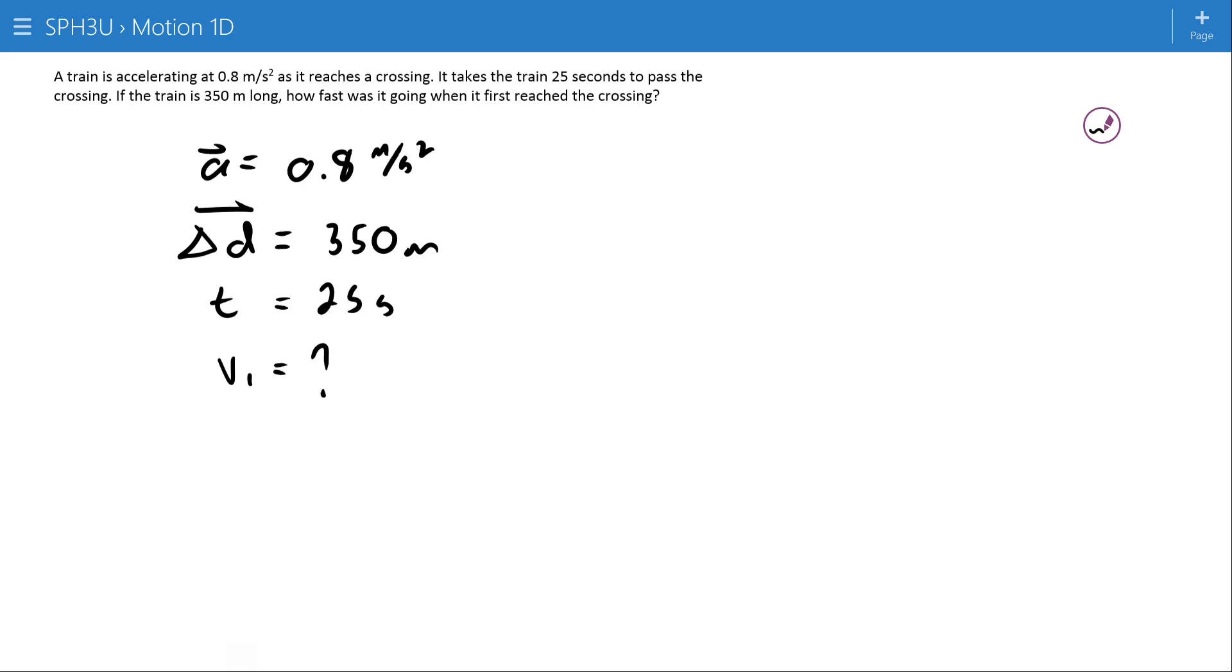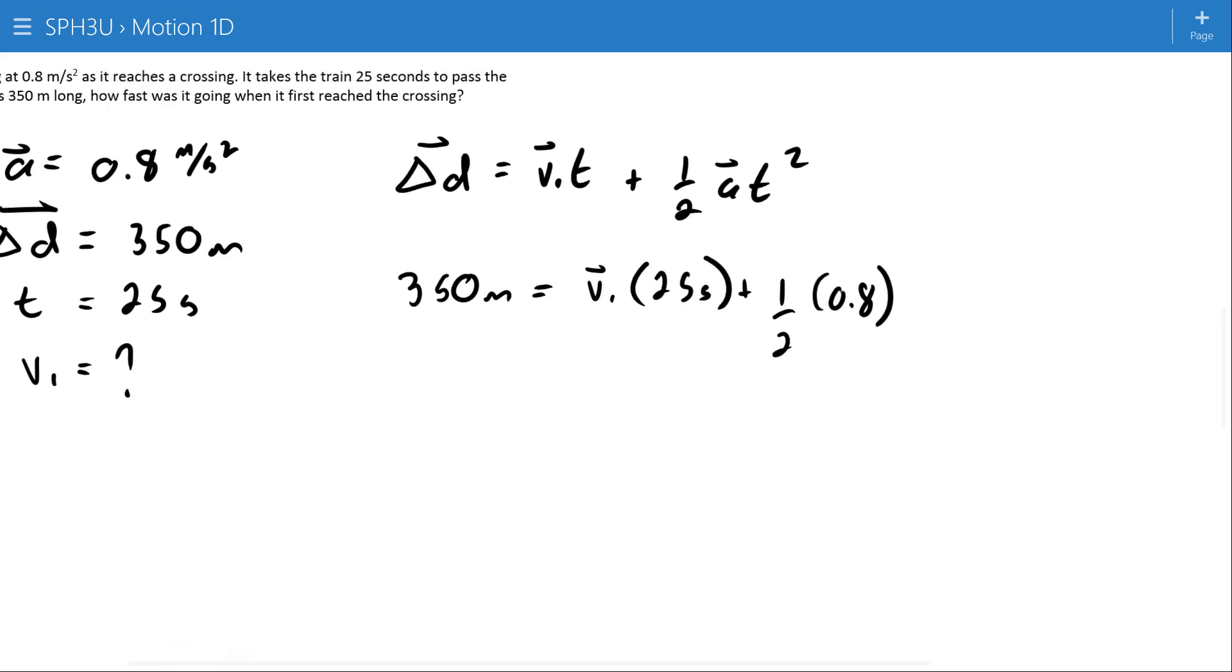So again, you can sneak a peek at your formula sheet, but we're looking here for delta D equals V1T plus one-half AT squared. That means 350 meters equals V1, that's what I don't know, times 25 seconds, plus one-half, 0.8, 25 squared.